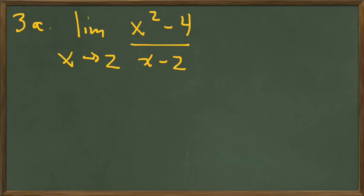Okay, so here's our first example of a 0 over 0 limit. Of course, when we plug 2 into the numerator, we get 4 minus 4, which is 0. Plug 2 into the denominator, we get 2 minus 2, which is 0. So what do we do?